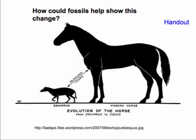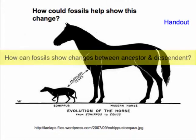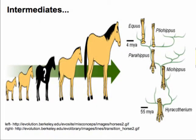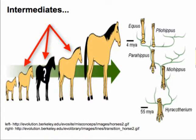One major example as we look at the evolutionary record: we have the idea that horses evolved from a smaller, slightly different organism. The question is, if this is true, how can the fossil record demonstrate such a change? The answer is, of course, intermediates. So if we have what we believe to be a common ancestor of horses, we should be able to see these intermediate fossils that show the transition between the ancestor and the horse.